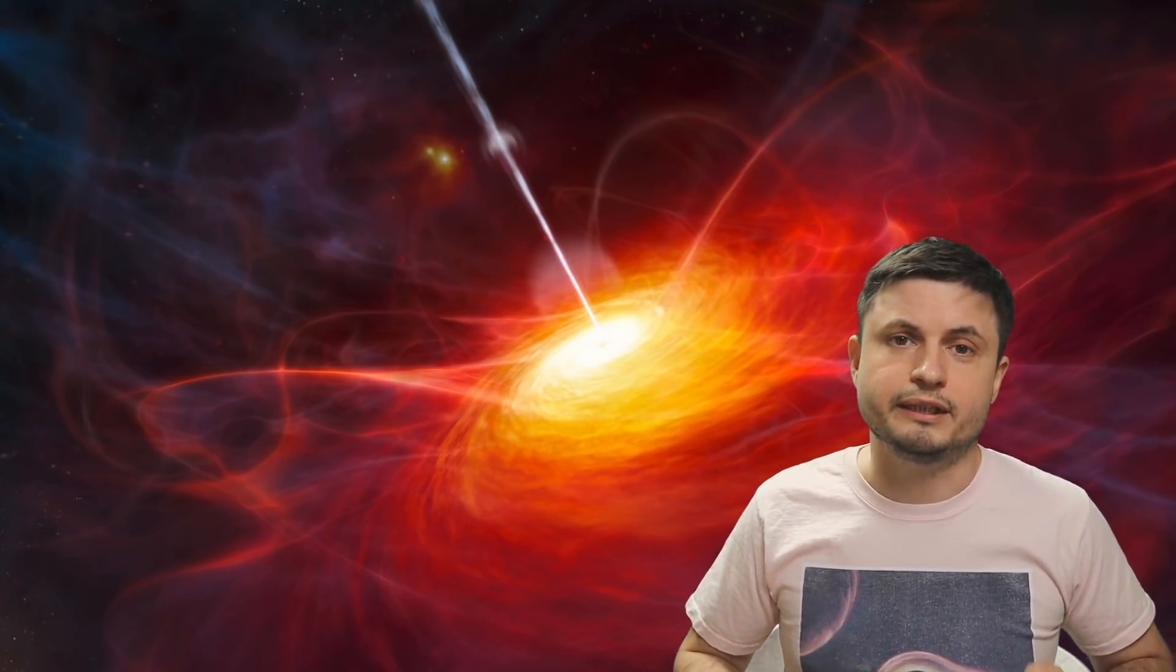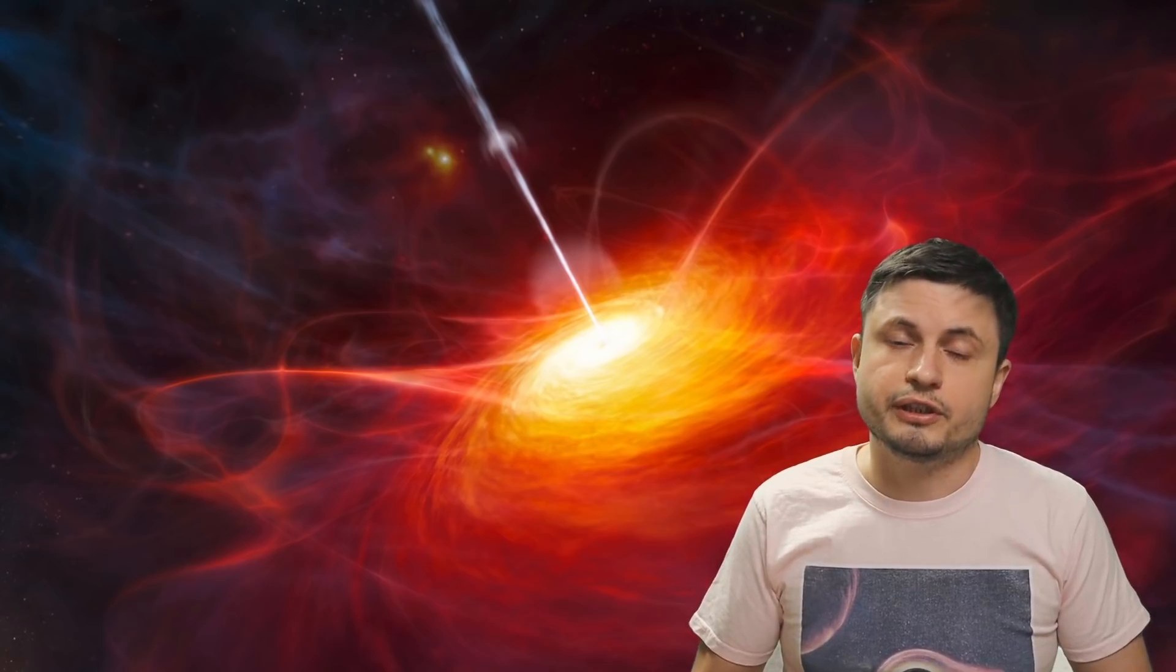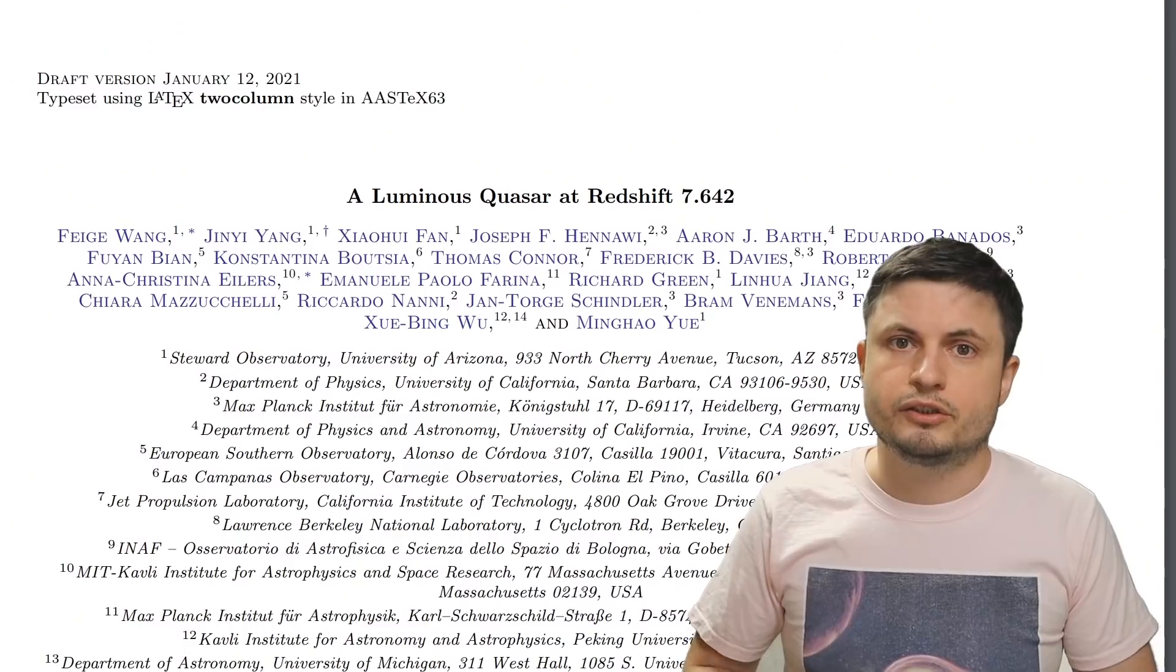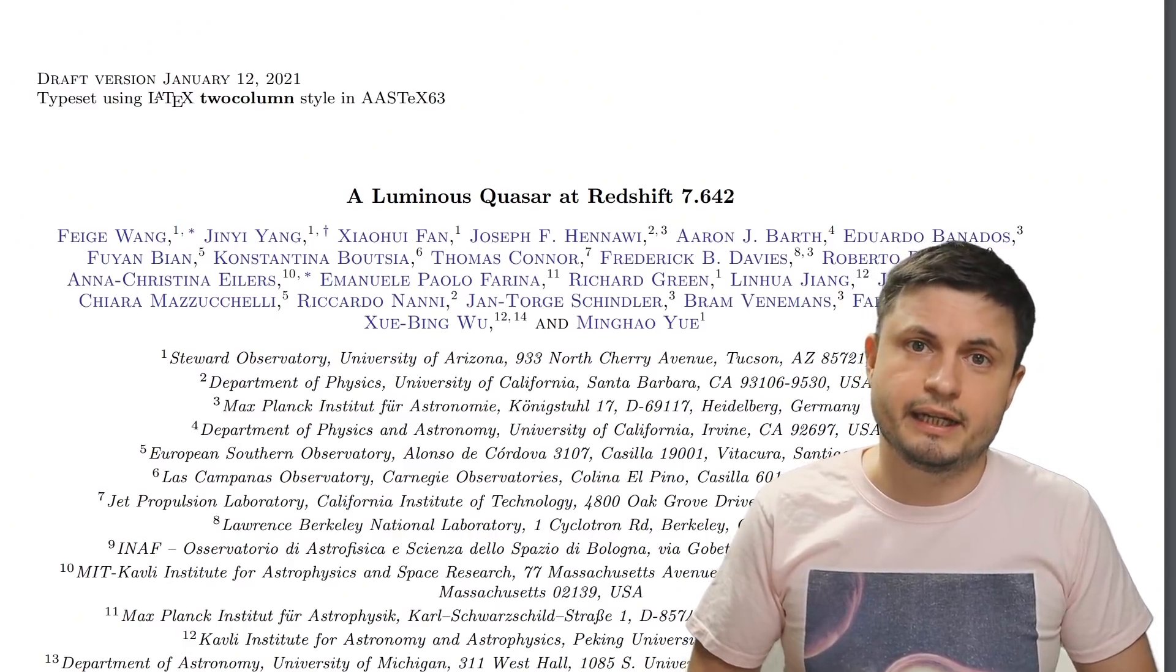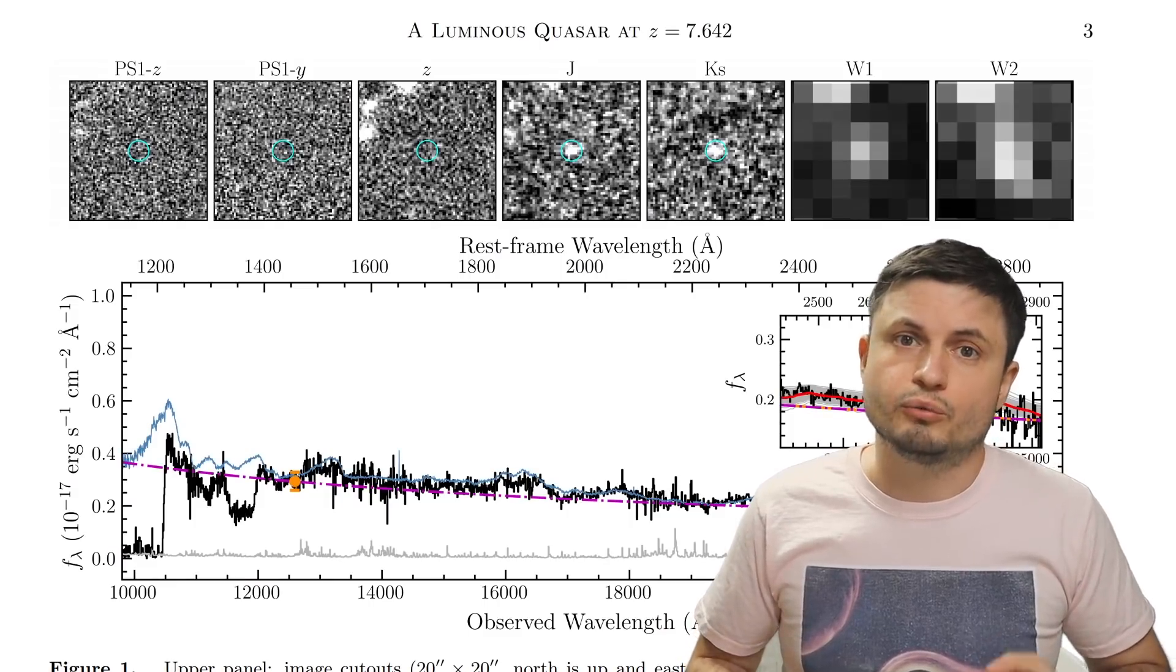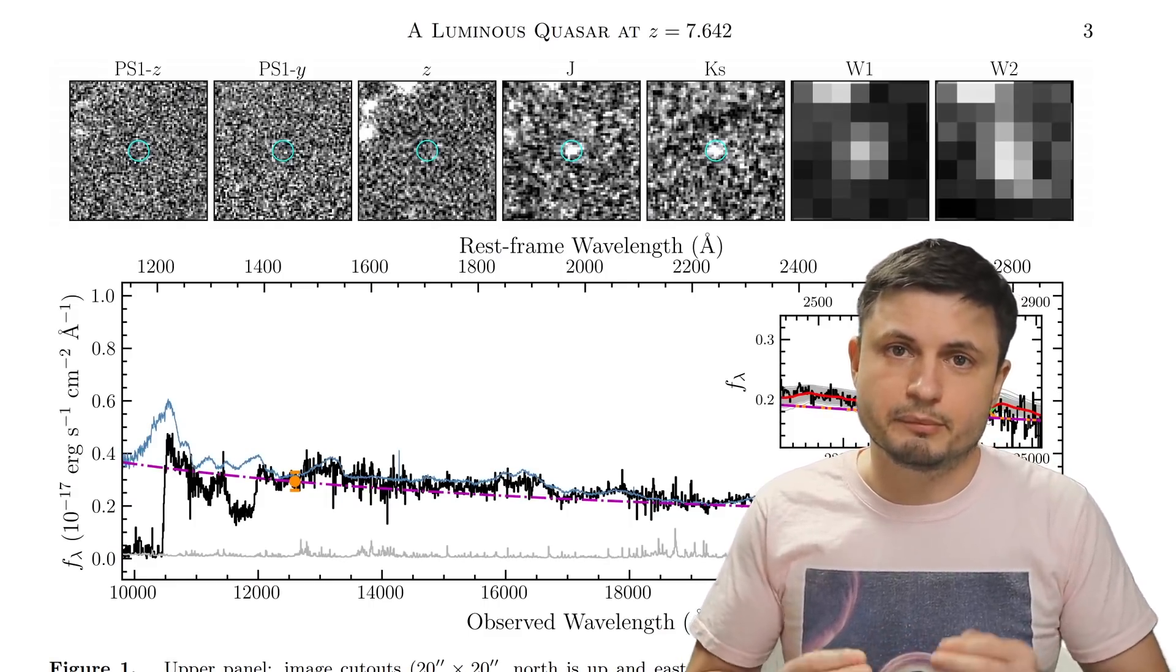And what the scientists seem to have discovered is essentially the most distant quasar ever found with some of the most unusual features and also what seems to be a ridiculously powerful and ridiculously massive black hole in the middle. And a lot of these features are somewhat difficult to explain. So let's talk a little bit more about this study and the discovery and also find out why this discovery is actually a little bit strange.